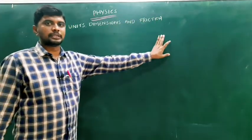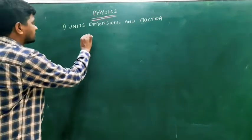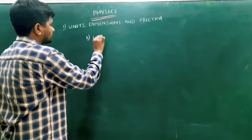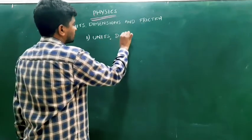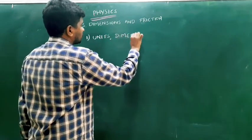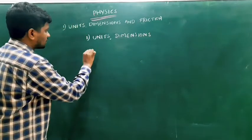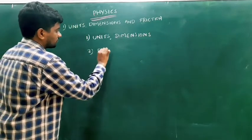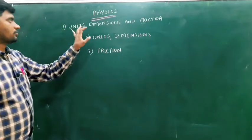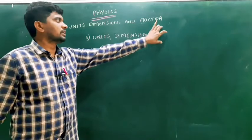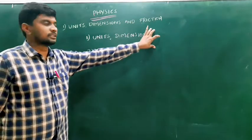The first chapter, units, dimensions and friction, is divided into two sub-topics. The first sub-topic is units and dimensions, and the second one is friction.